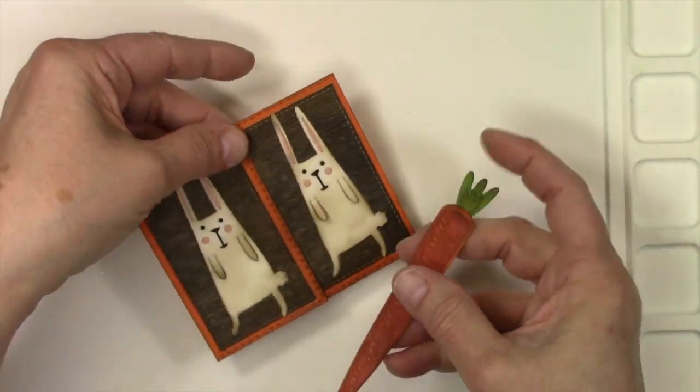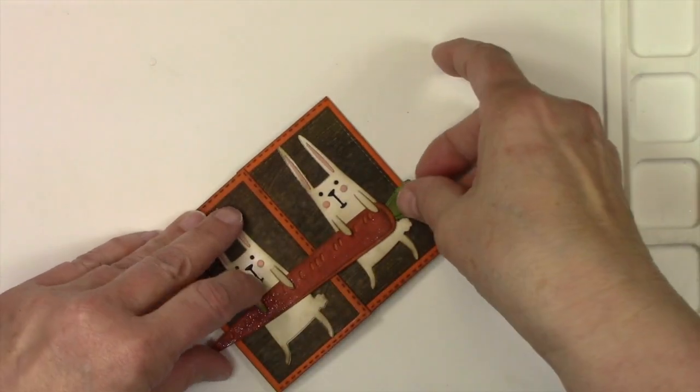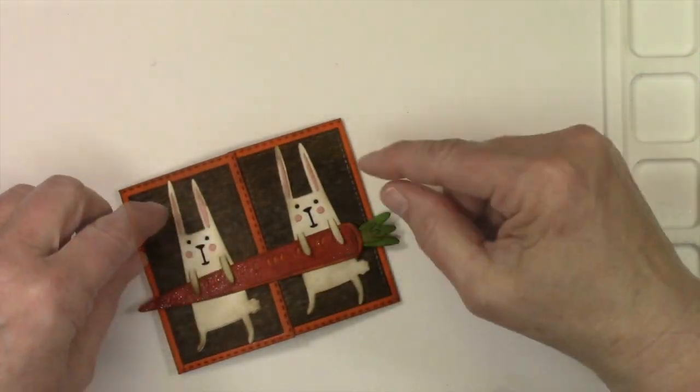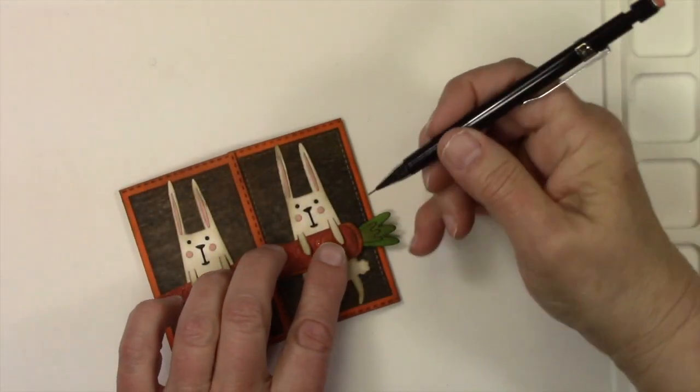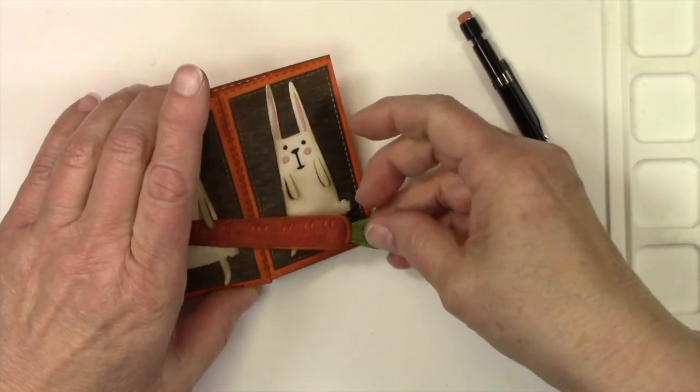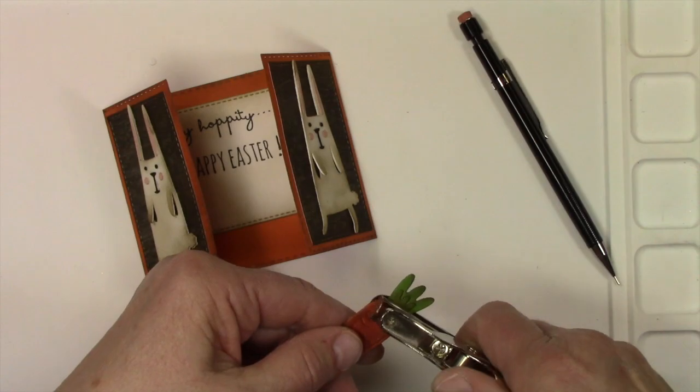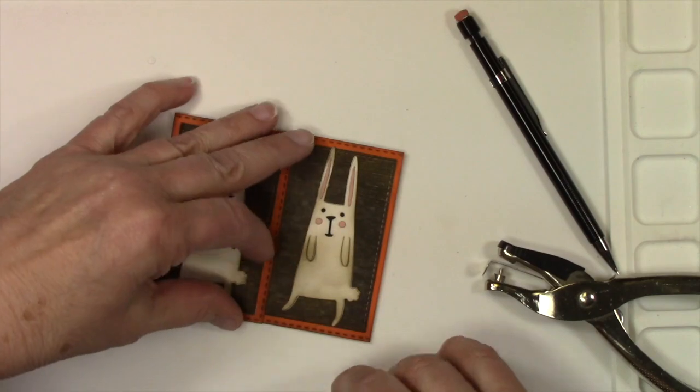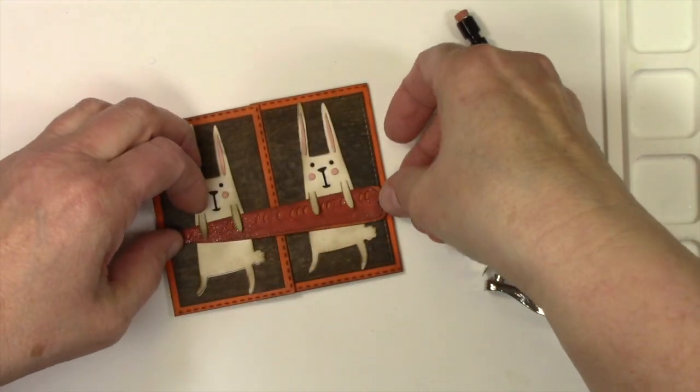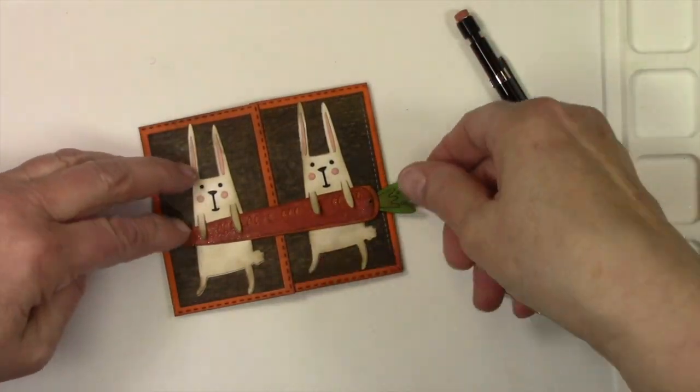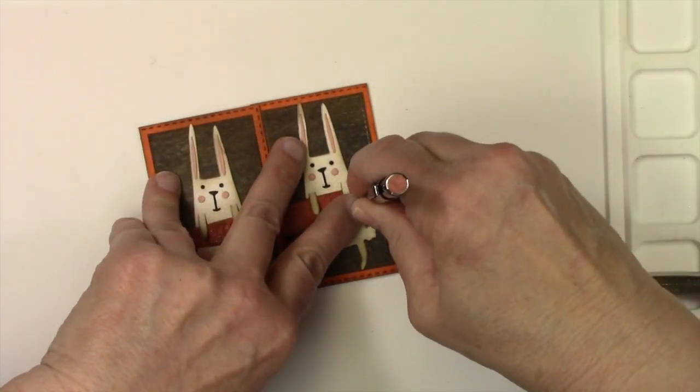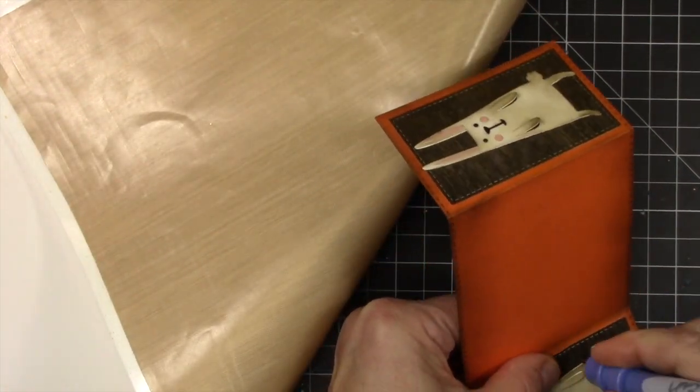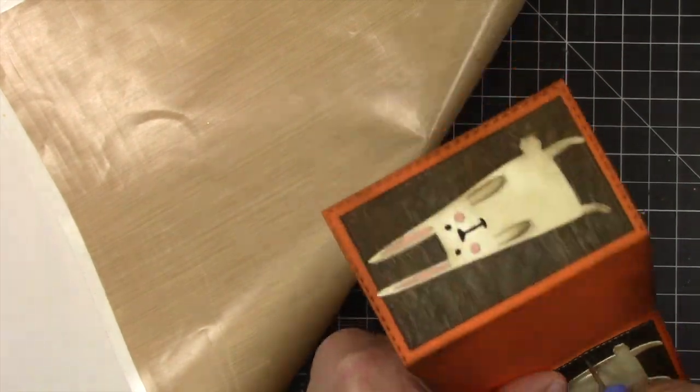So there is our tri-fold card and I'm checking to make sure that the carrot, you know, where I want to place that. This will fit in an A2 size envelope just fine. And I'm going to mark where I want my little brad to be. And then I will mark it on the front of the card. And this really would make a cute little gift card holder too. You just add a couple slits to the inside and stick a gift card in. It would fit perfectly.